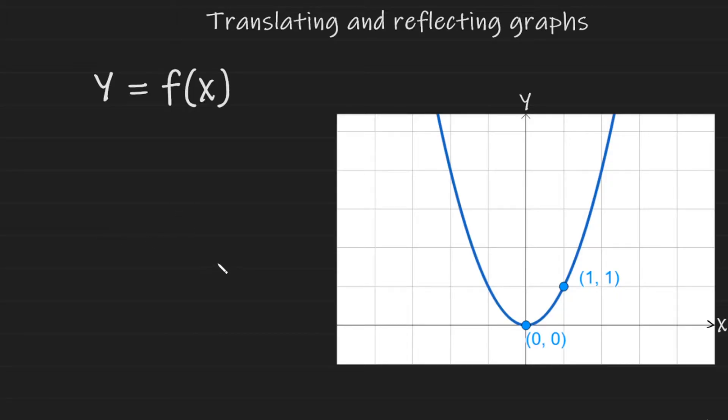Okay, for our second translation, I'm going to add 1 to the inside of the function, and that looks like this. When I say inside of the function, I mean inside of the brackets here. And this will affect all of the x values for the graph.